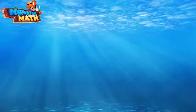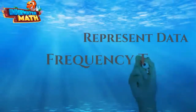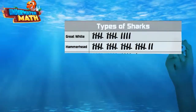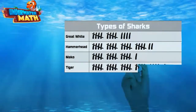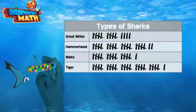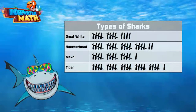Welcome back to Underwater Math. Today we're going to review representing data with frequency tables. A frequency table is a good way to show the number of times something occurs. The frequency is usually shown by tally marks — those tiny little lines that can be hard to see.